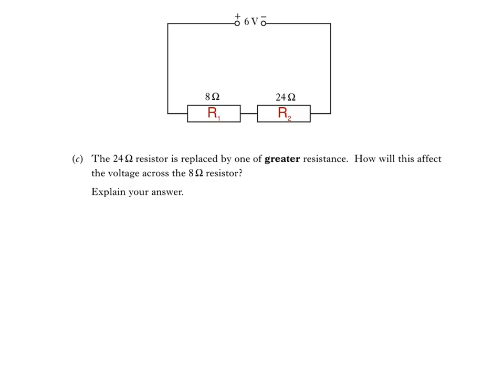Now, we saw earlier that we could use Ohm's law to calculate the voltage across R1, the 8 ohm resistor. It was calculated by multiplying the current times R1. So, how would replacing the 24 ohm resistor affect the current in the circuit? We could use this equation to find out. Well, the supply voltage hasn't changed, so replacing the 24 ohm resistor with one of greater resistance will increase the total resistance in the circuit, meaning that current will decrease. What does that mean for voltage V1? Well, the value of R1 hasn't changed. It's still 8 ohms. So, with a lower current in the circuit, voltage V1, the voltage across the 8 ohm resistor, would reduce.